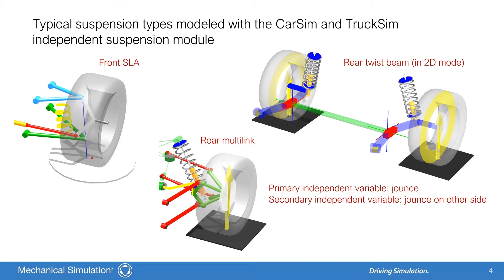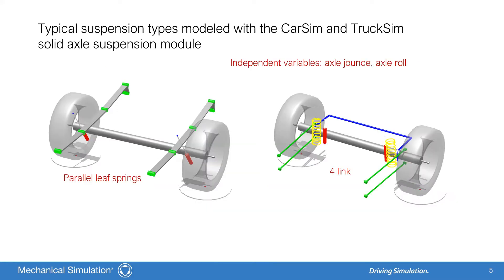The independent suspension module defines the motion of one wheel relative to the sprung mass as a function of jounce and optionally as a secondary function of jounce of the other wheel on the axle. This module is typically used in three ways. First, to model a steered front suspension with a well-defined steering axis such as an SLA. Second, to model a non-steered multi-link rear suspension. And third, to model a twist beam rear suspension. The twist beam application takes advantage of the secondary independent variable. The solid axle suspension module defines the motion of a rigid axle relative to the sprung mass as a function of axle jounce and axle roll. This module is used for modeling both steered and unsteered solid axle suspensions.